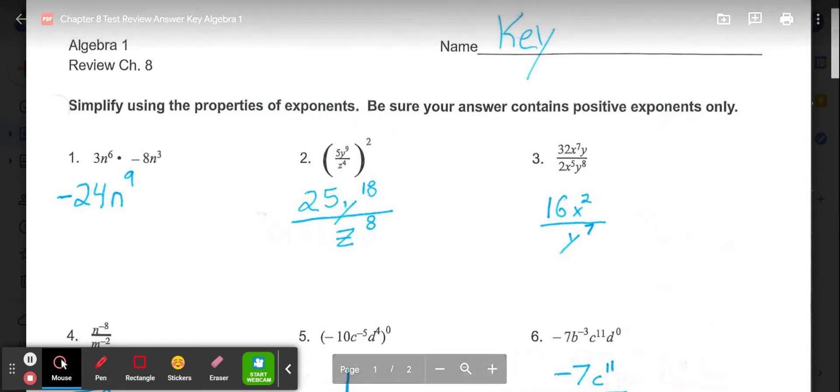In number 2, in parentheses we have 5y to the 9th over z to the 4th, all to the 2nd power. That means both top and bottom are going to that power, so 5 squared out in front is 25. Y to the 9th to the 2nd power, you need to multiply the powers, so it would be y to the 18th. And z to the 4th on the bottom, 4 times 2 would give us z to the 8th.